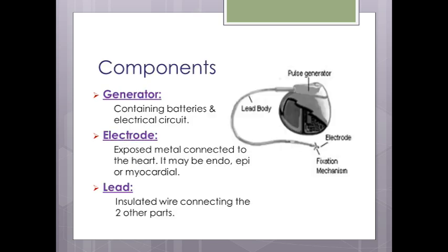The components of an ordinary pacemaker include a generator that generates electrical current — it may deliver electricity to the heart, sense the heart, or deliver a shock — and an electrode embedded inside the myocardium or epicardium. The connection between these two parts is the lead.